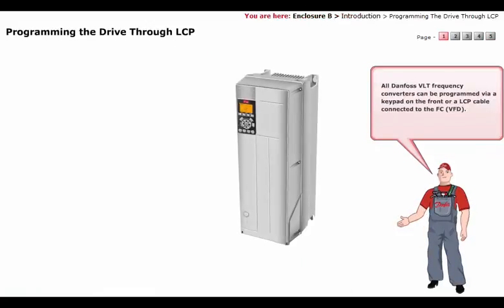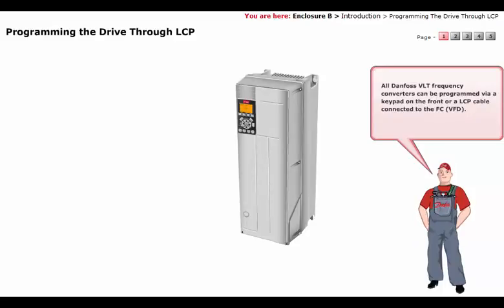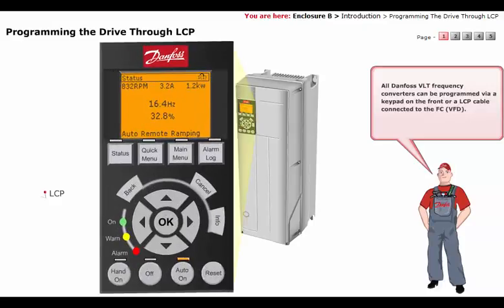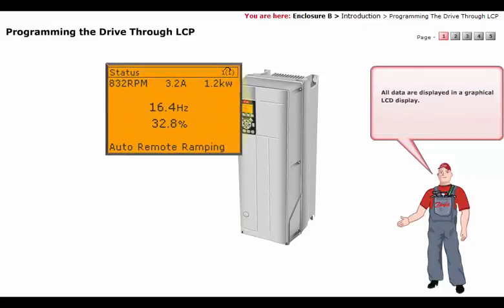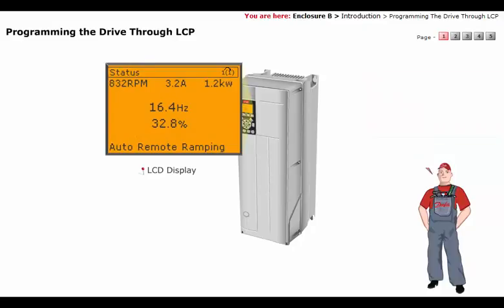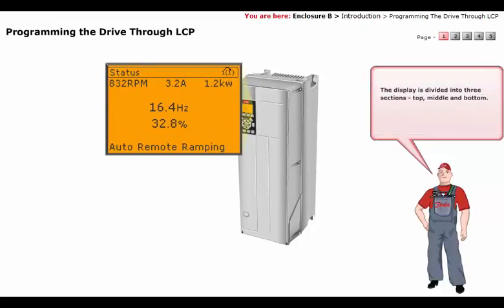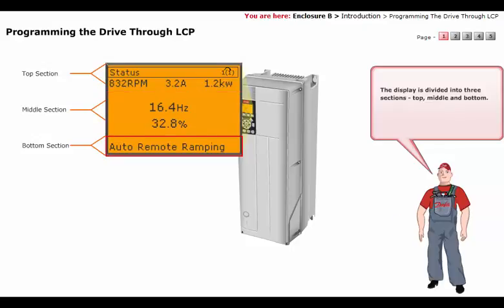All Danfoss VLT frequency converters can be programmed via a keypad on the front or an LCP cable connected to the frequency converter. All data are displayed in a graphical LCD display. The display is divided into three sections: top, middle, and bottom.